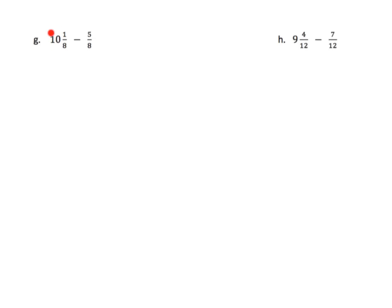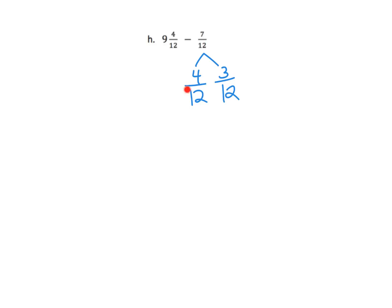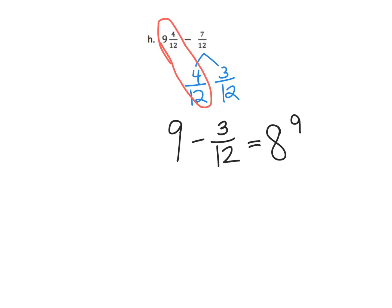Just more of the same — the idea is to decompose that second fraction. Let's do problem H. Because our first fraction in the mixed number is four-twelfths, we're going to decompose the seven-twelfths into four-twelfths and three-twelfths. Nine and four-twelfths subtract four-twelfths gives us nine. Now we subtract three-twelfths, and nine subtract three-twelfths is eight and nine-twelfths.